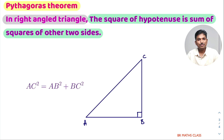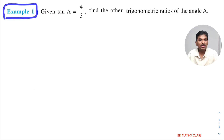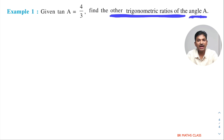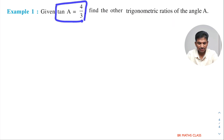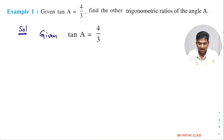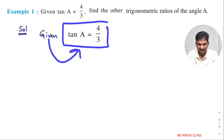Now we'll start the first example related to trigonometry. They have given one trigonometric ratio, tan A, and are asking us to find the other trigonometric ratios of angle A. We know there are six trigonometric ratios in total — one is given, so we need to find the other five: sin A, cos A, cosecant A, secant A, and cot A. Given that tan A equals 4 by 3.